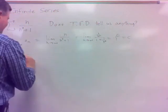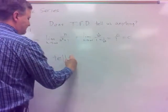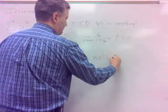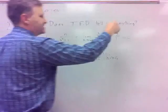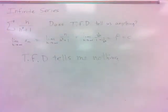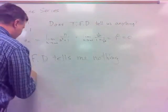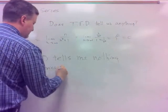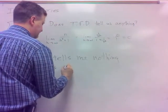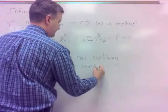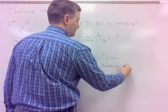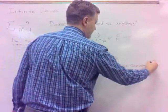The only time the test for divergence tells me anything is if this limit is not zero. If the limit is zero, the test for divergence is out — I can't use it. The series still could converge or diverge; it tells me nothing. I have to use another test.